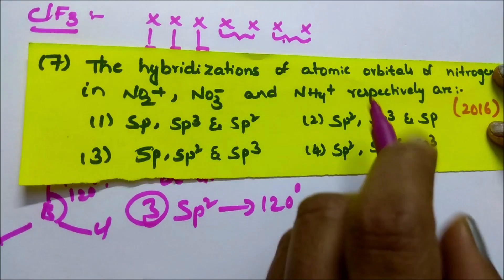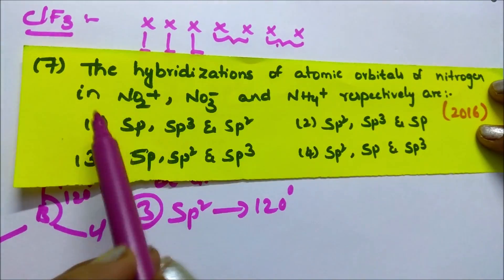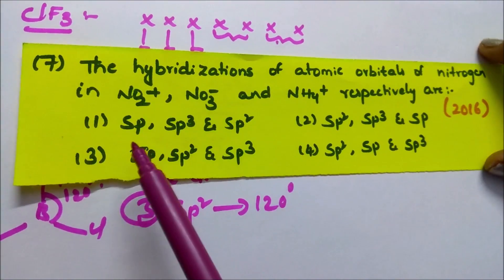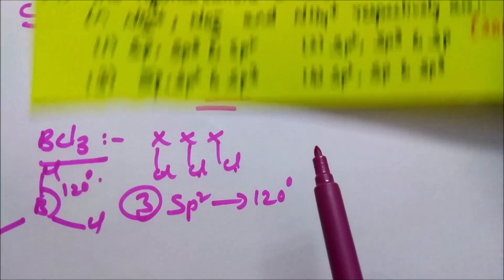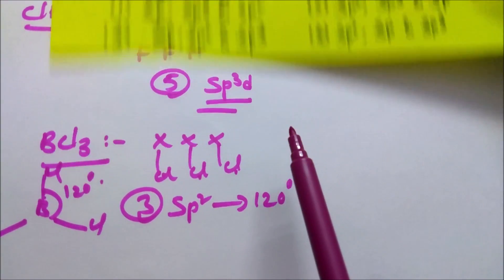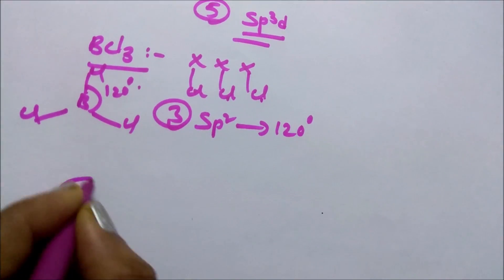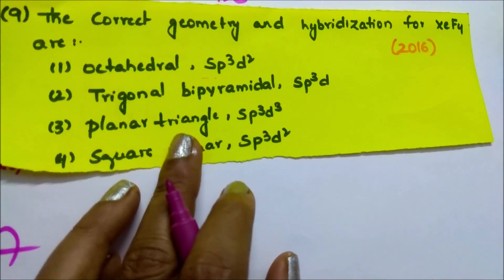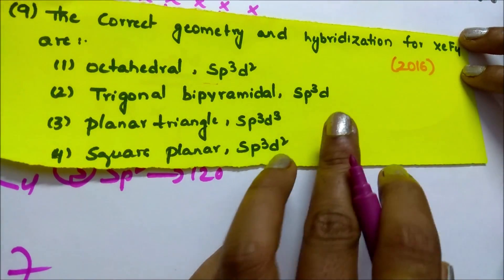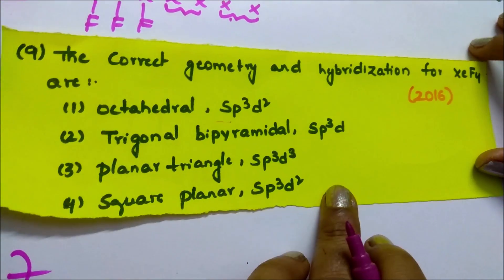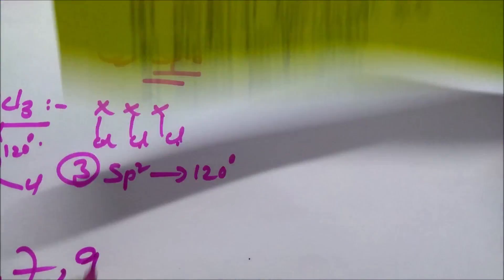The hybridization of atomic orbitals of nitrogen — try this question using the trick I taught. Questions 5, 7, and 9 on correct geometry and hybridization of XeF4 are also given as test-yourself questions.